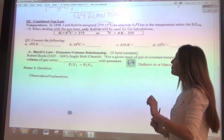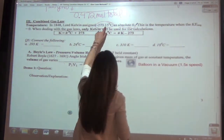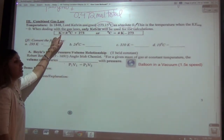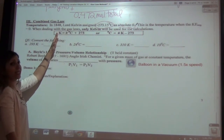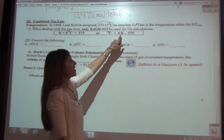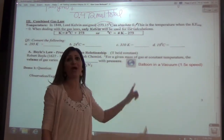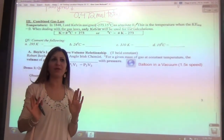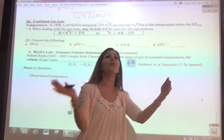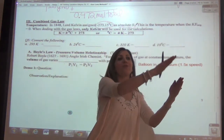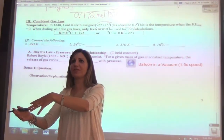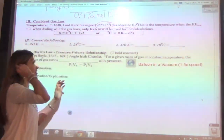When dealing with the gas laws, we are only going to use Kelvin. To switch between Kelvin and Celsius, instead of using 273.15, we're just going to use 273. If you're going from Celsius to Kelvin, simply add 273. Going back to Celsius, subtract 273. A really easy way to remember: C comes before K in the alphabet — going to Kelvin, add 273; going back to Celsius, subtract 273.